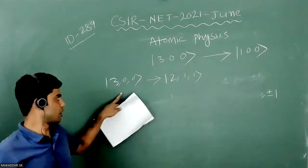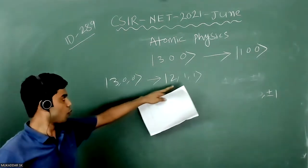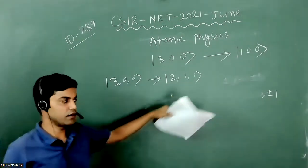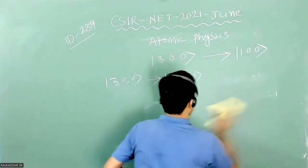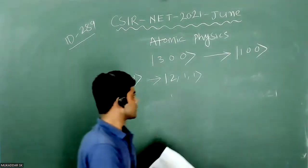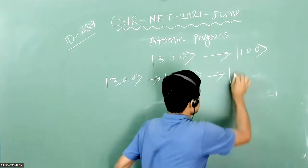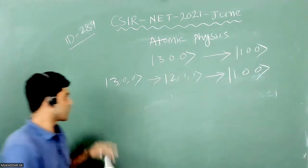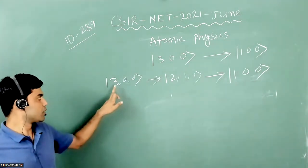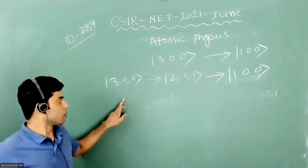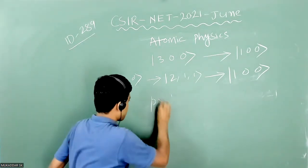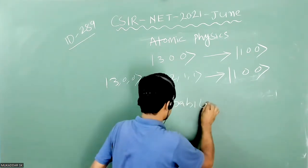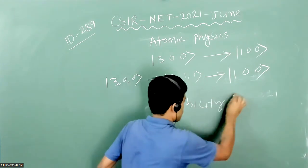This is the most suitable option: 3,0,0 to 2,1,1 is the possible decay mode with probability 1 by 3, and after that 2,1,1 to 1,0,0. This is 100% possible, it has 100% possibility. So this is the right way to decay from 3,0,0 to 1,0,0 and with probability 1 by 3.